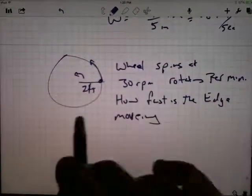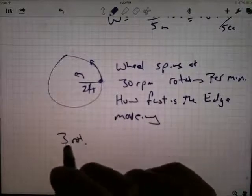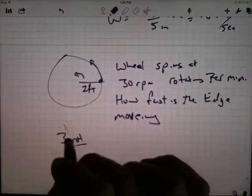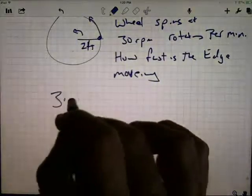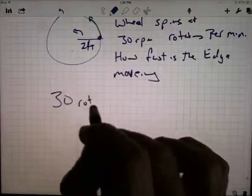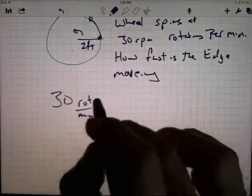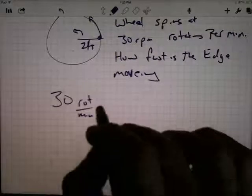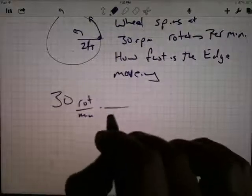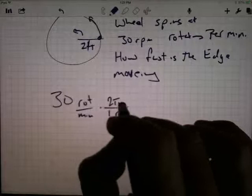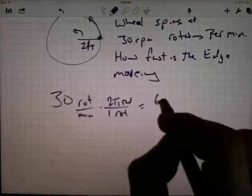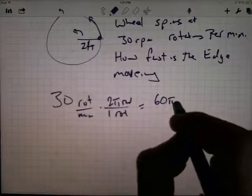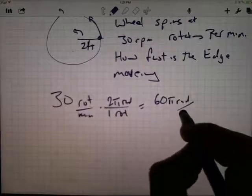Well, 30 rotations per minute, let's turn that into radians per minute, and I do that by an exchange rate, that one rotation is worth two pi radians, so we're up to 60 pi radians per minute.